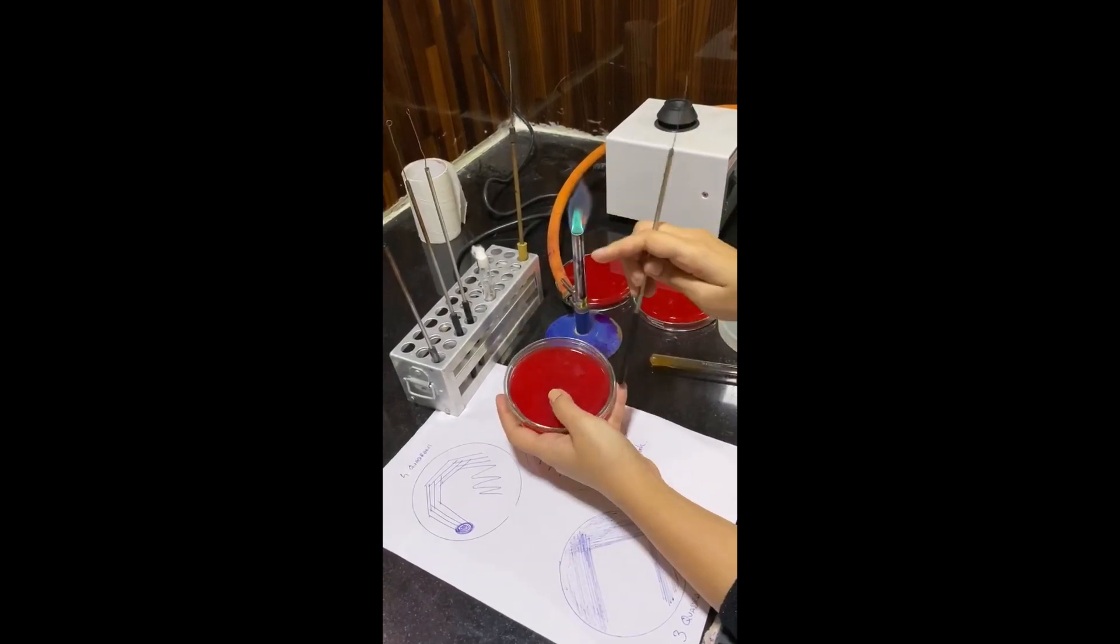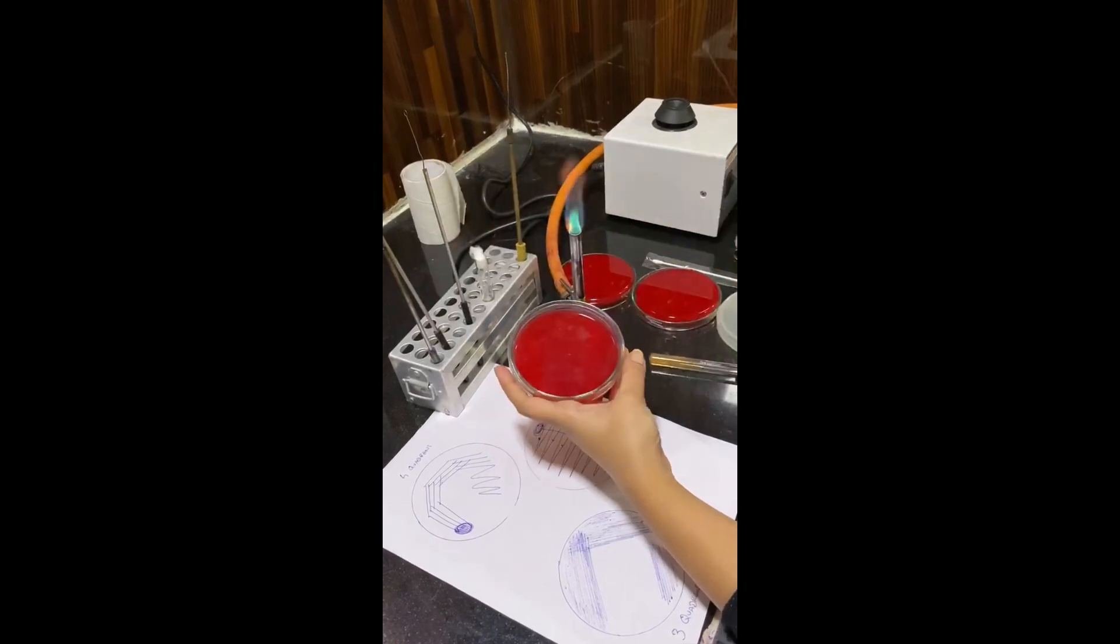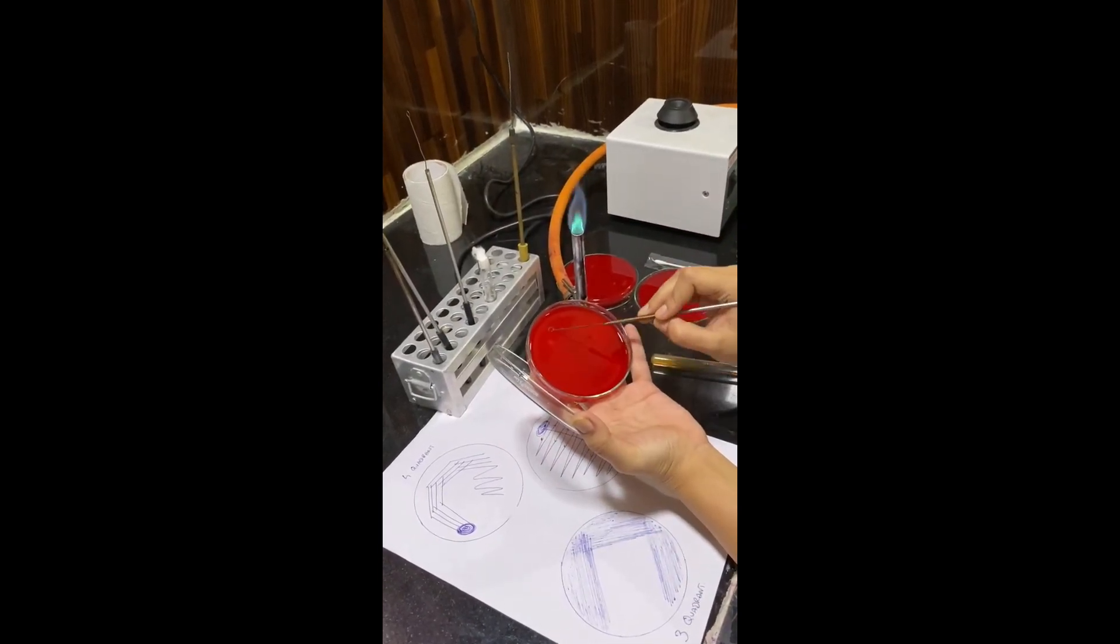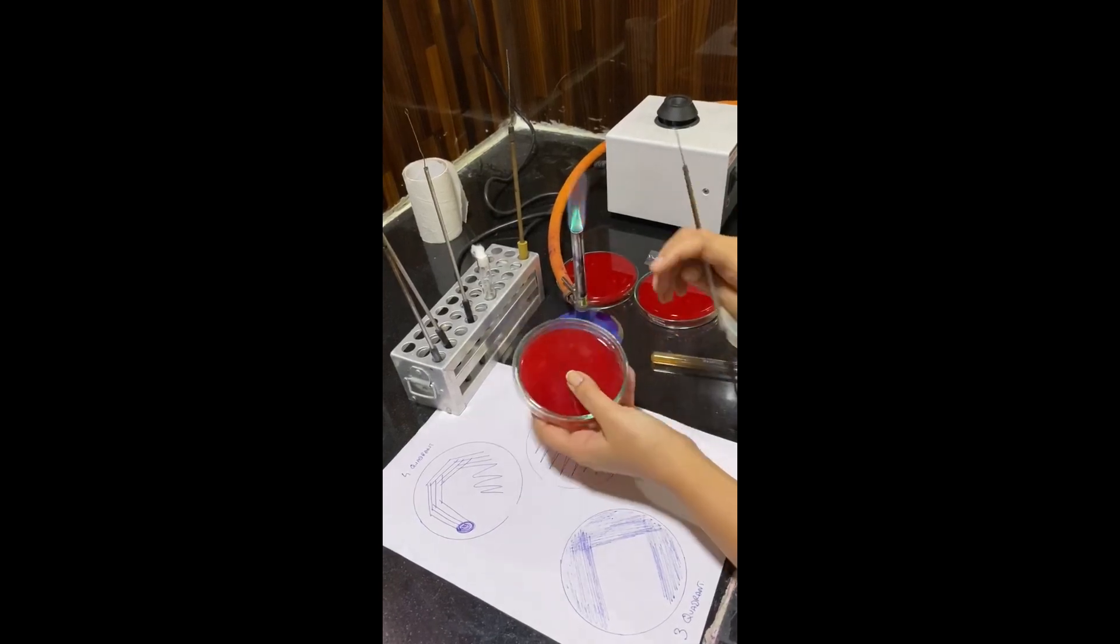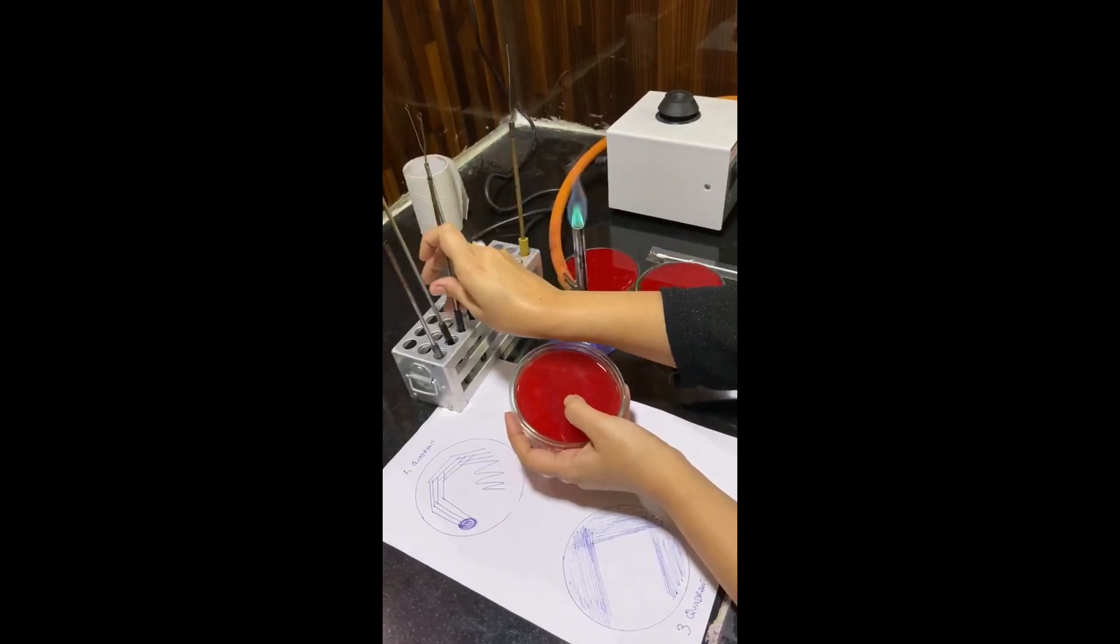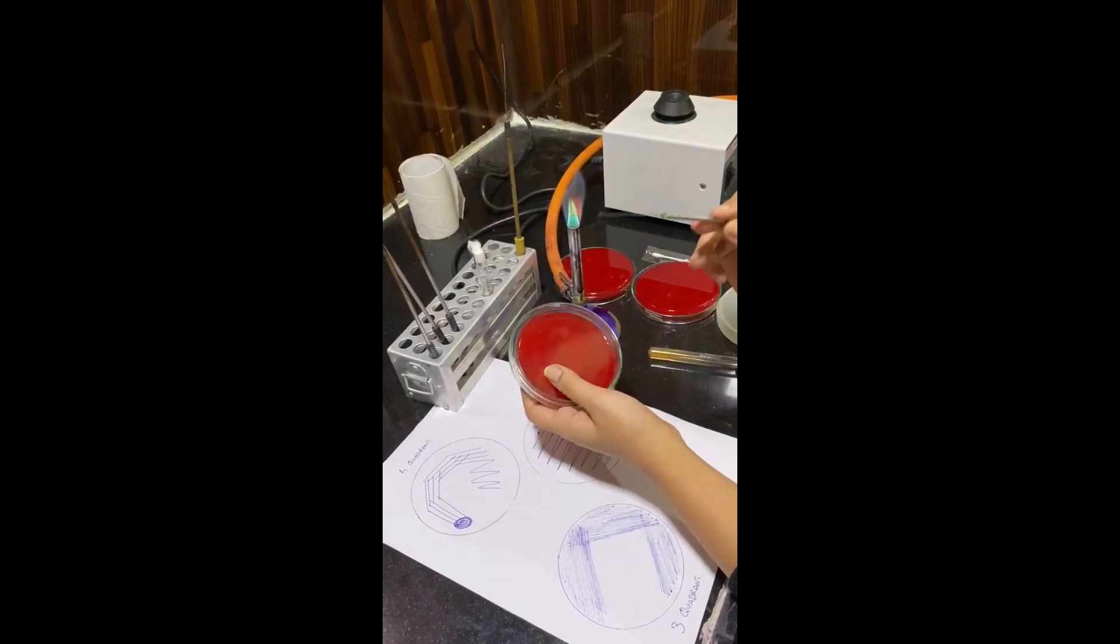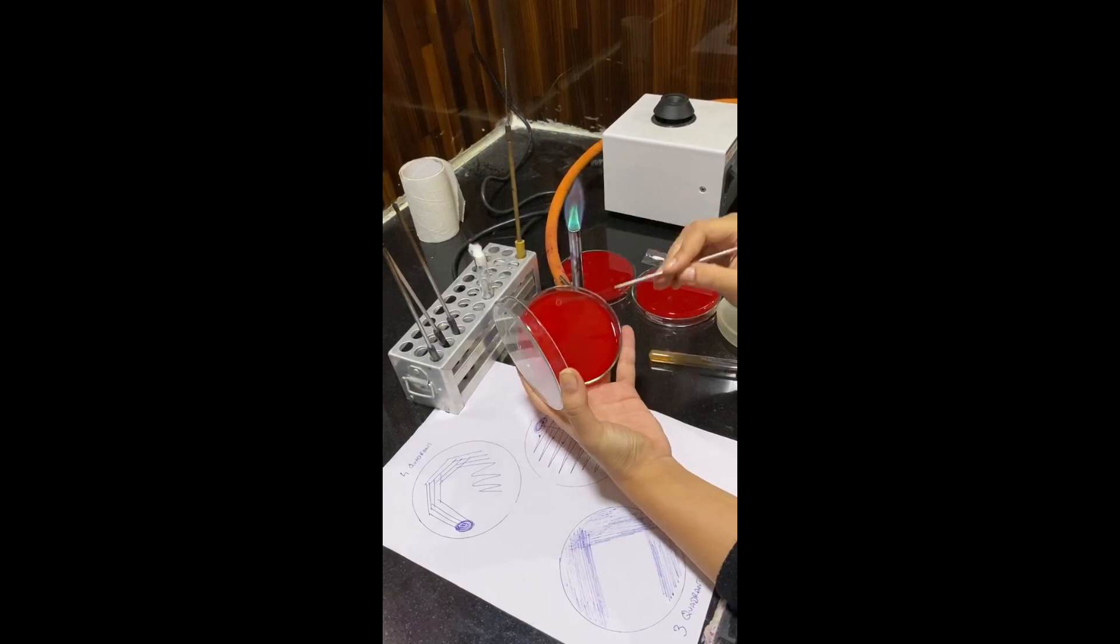Again, the same method: either sterilize or use another sterilized loop. Now after the tertiary streak, quaternary streak should be done. And this time I am going to draw a tail too. In this manner.